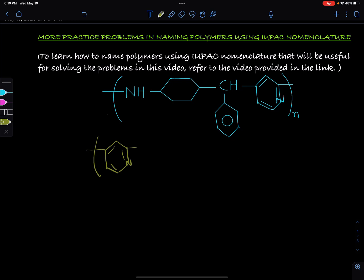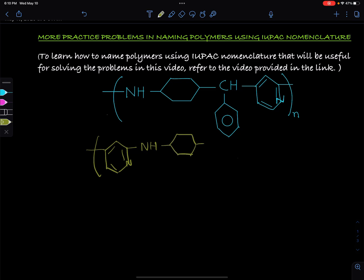So which one do we put? According to IUPAC nomenclature the hetero atom gets precedence, so the NH group goes next. Now the rest follows according to the flow of the polymer chain, which would be cyclohexyl followed by the phenylmethylene.